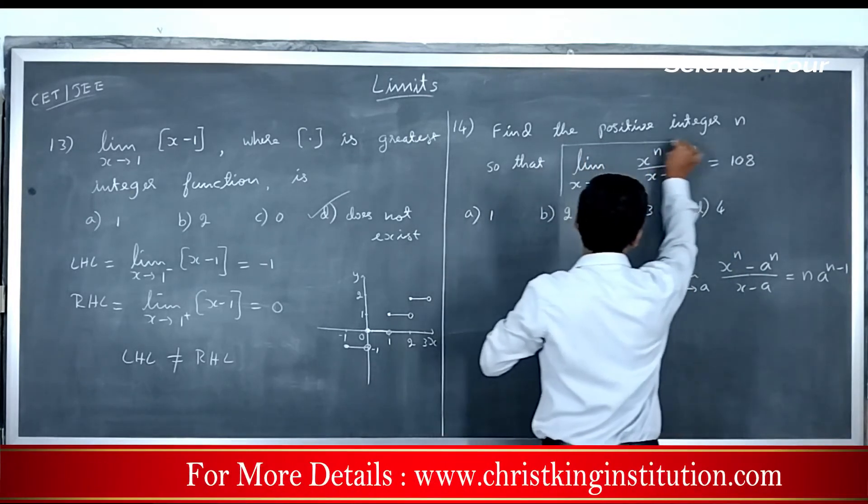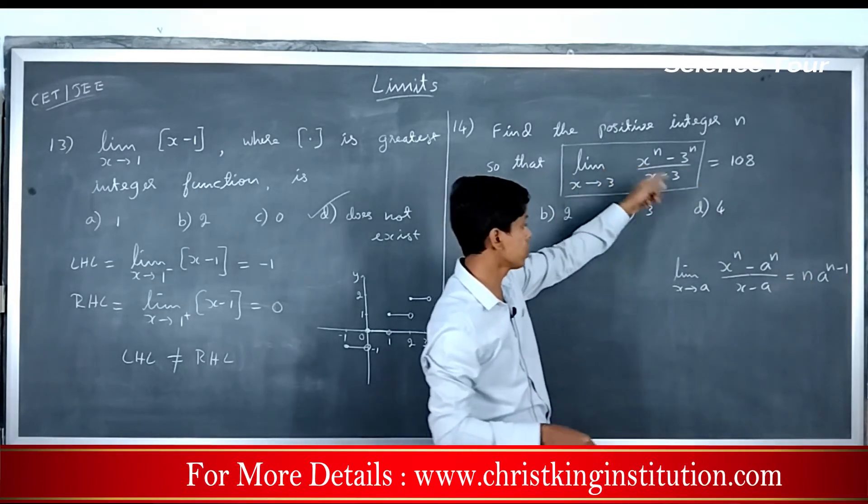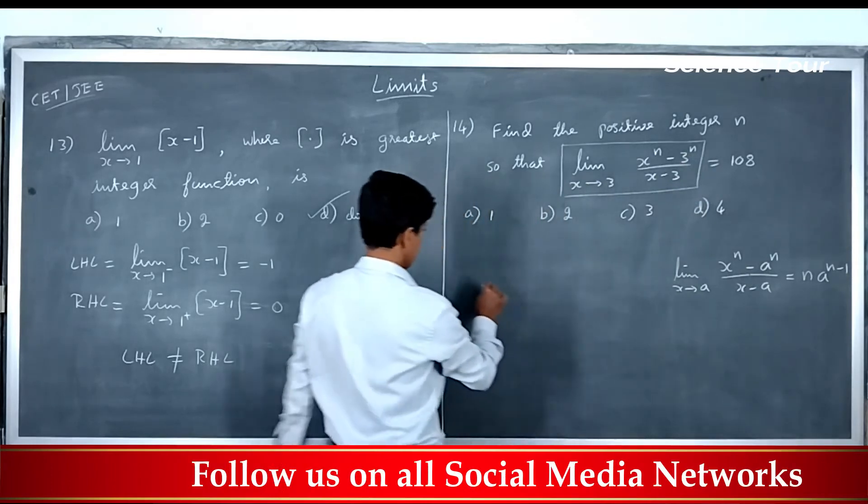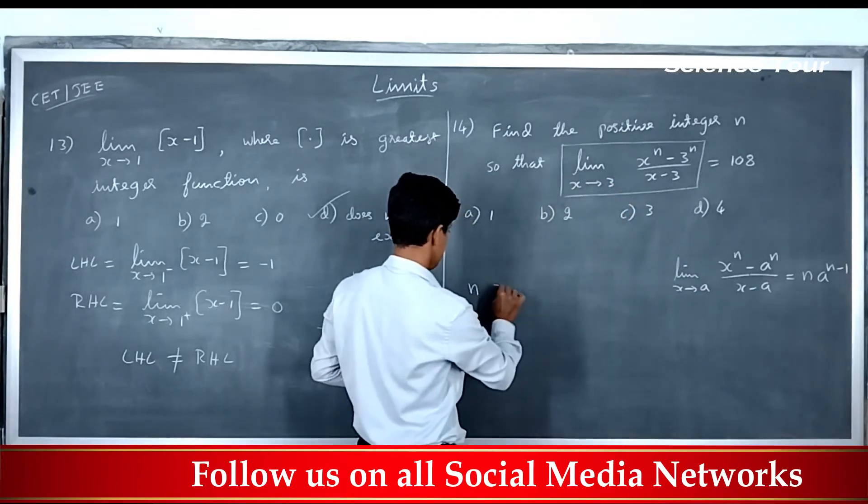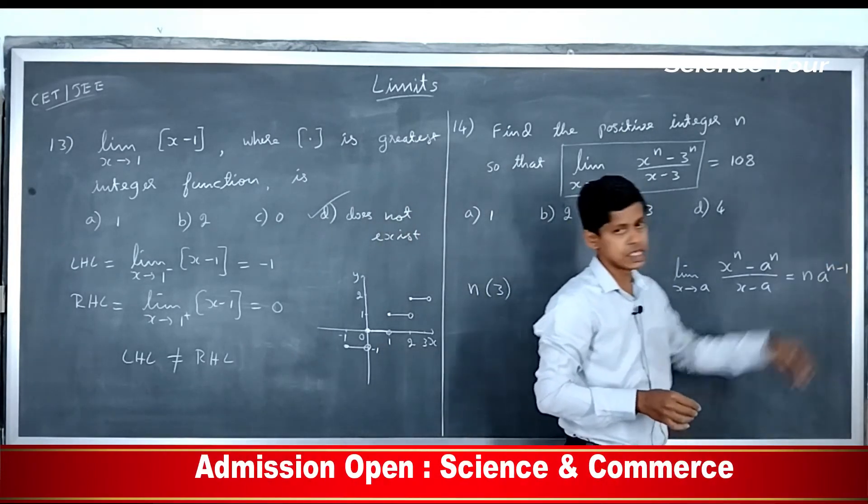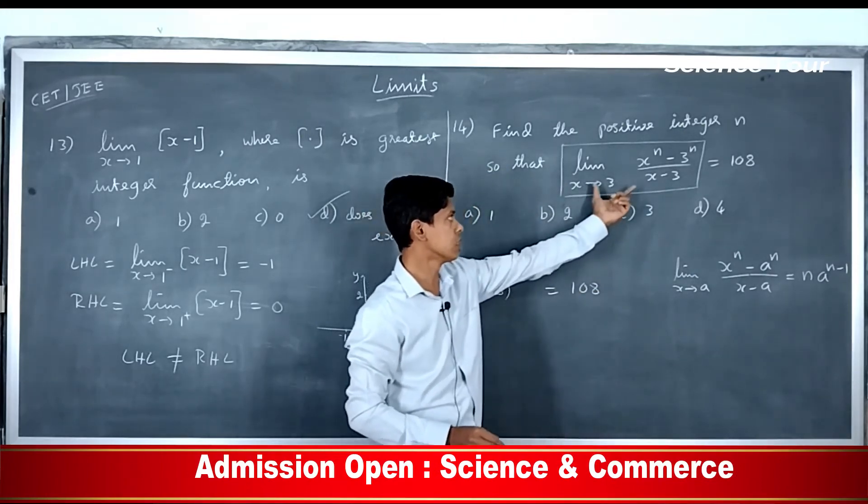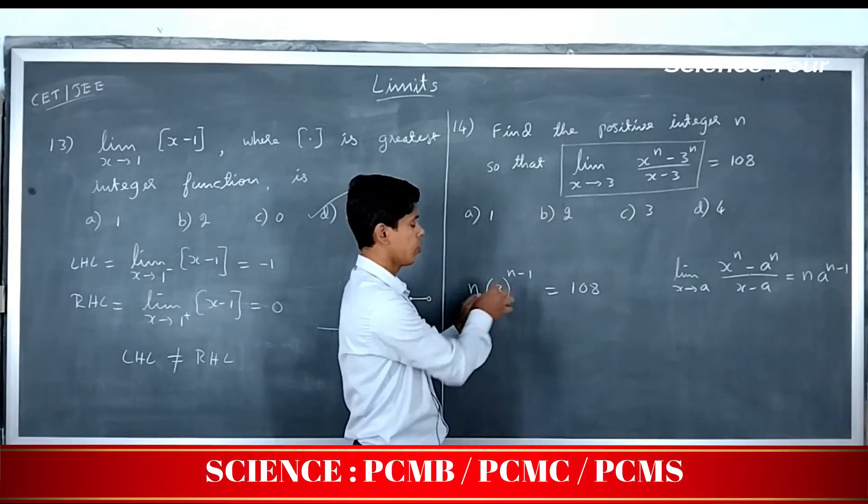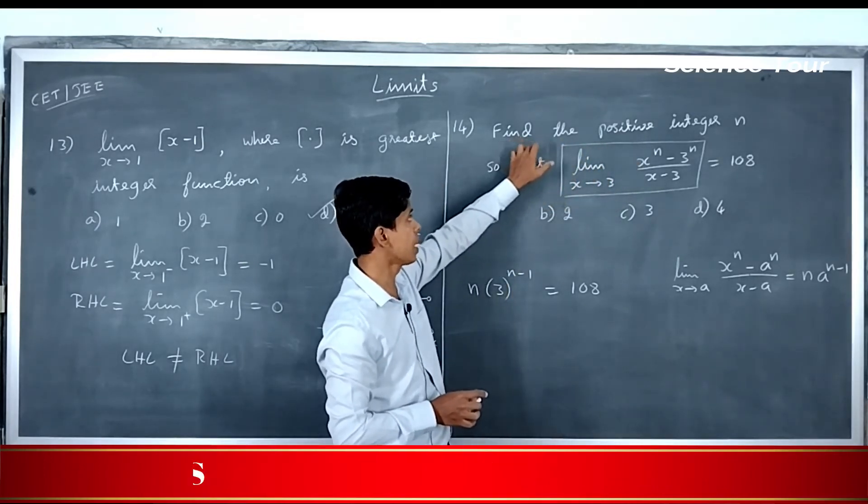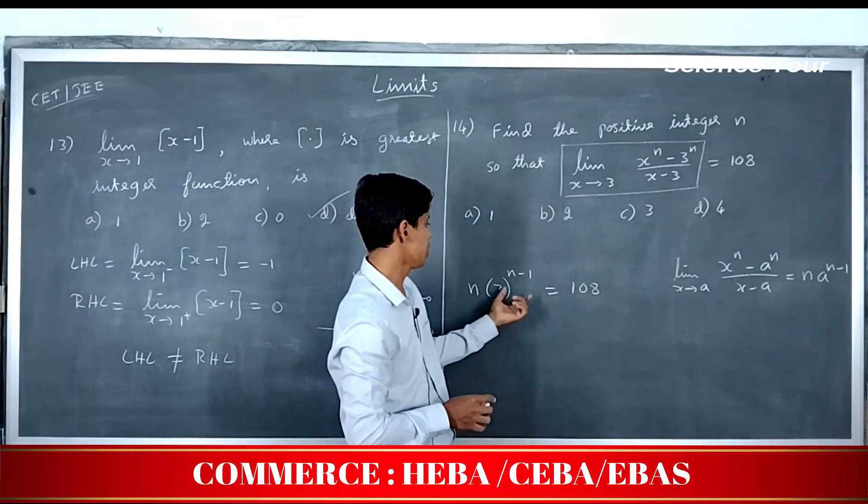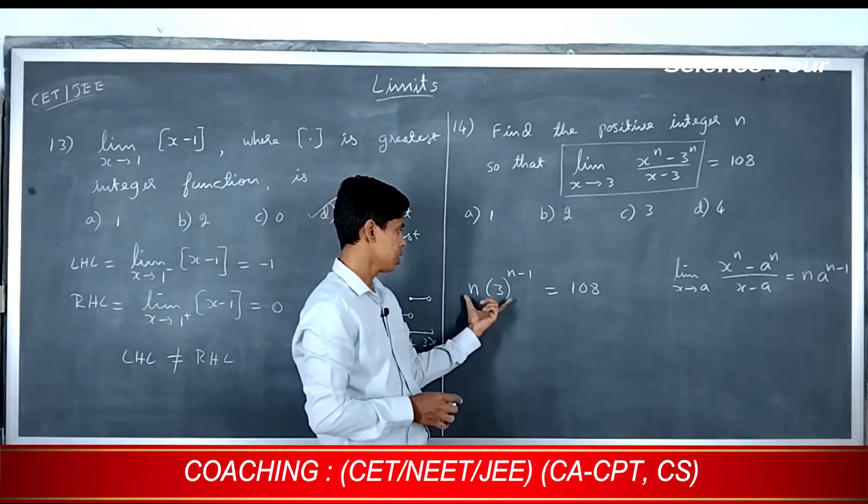So in this place, we must write the right hand side of the formula. So that will be going to be n. That will be n and what is a here? a is 3 raised to n minus 1. So that is equal to 108. I hope you understood. So in this place, I have replaced the RHS of the formula with the value of a, a is 3. What do we not know? We do not know n. So we have to find the positive integer n here. So we have to rearrange this term 108 in order to suit the LHS.